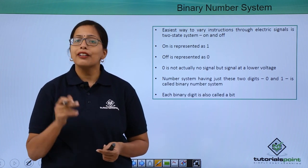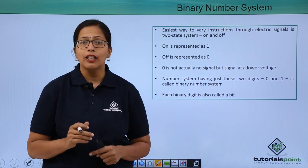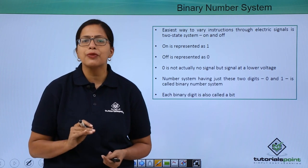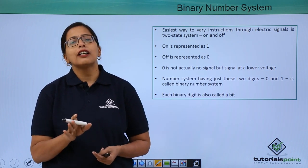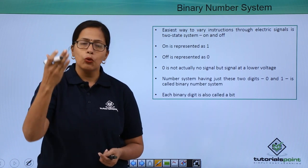0 and 1 are the two digits of the binary number system, which are also called bits. Now you must remember that 0 actually does not mean absence of the electric signal. It just means that the voltage of the electric signal is lower than that of number 1.